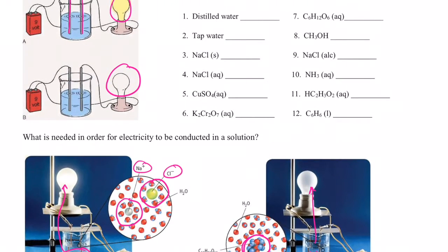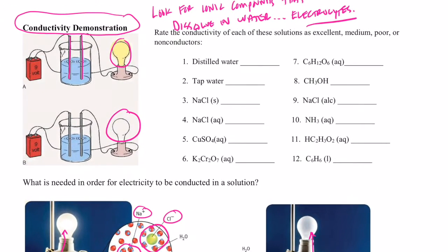Note the difference between ionic compounds dissolved in water and molecular compounds dissolved in water. There will be a couple of anomalies — ammonia and acetic acid you would expect not to conduct electricity when dissolved in water, but they do. We'll hopefully clear those up as the year goes on.